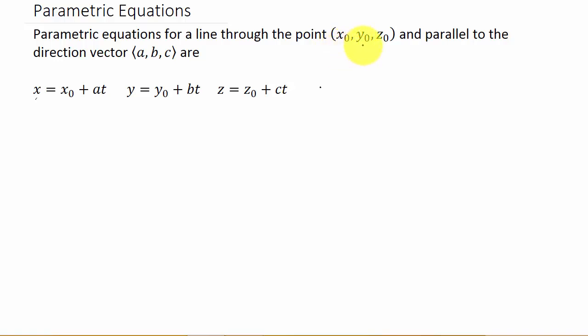Parametric equations for a line through the point (x₀, y₀, z₀) and parallel to the direction vector ⟨a, b, c⟩ are: x = x₀ + at, y = y₀ + bt, z = z₀ + ct. So you can see that we need the point—that's your x₀, y₀, z₀—and your direction vector ⟨a, b, c⟩.